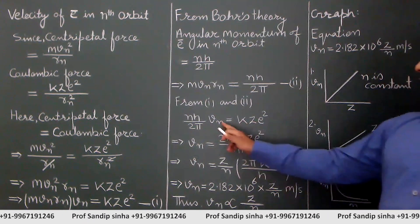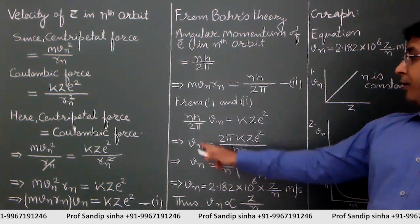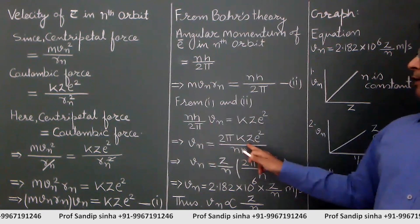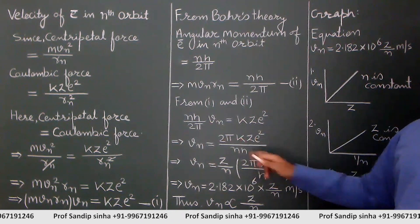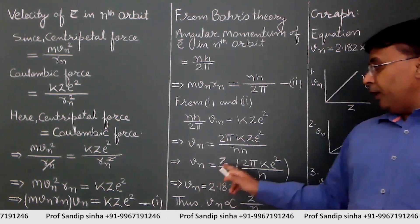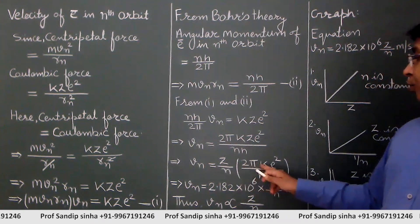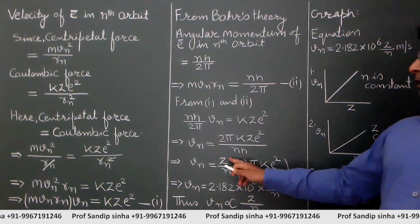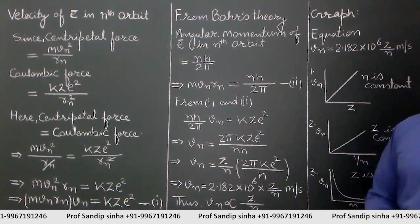From this equation, vn can be easily calculated. Multiply 2π to the right side and divide by nh, so vn = 2πkze²/(nh). We can write this as vn = (z/n) × (2πke²/h), separating out z/n since z and n are the varying quantities.